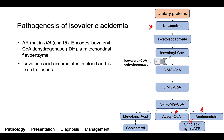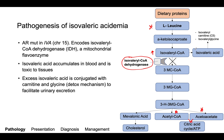If there's a block somewhere in that pathway — for example, at isovaleryl-CoA dehydrogenase, the enzyme defective in isovaleric acidemia — we end up with a buildup of isovaleryl-CoA and subsequently isovaleric acid. The body doesn't want this, so it conjugates it to isovaleryl-carnitine and isovaleryl-glycine, which are the body's ways to excrete unwanted compounds, particularly through the urine.